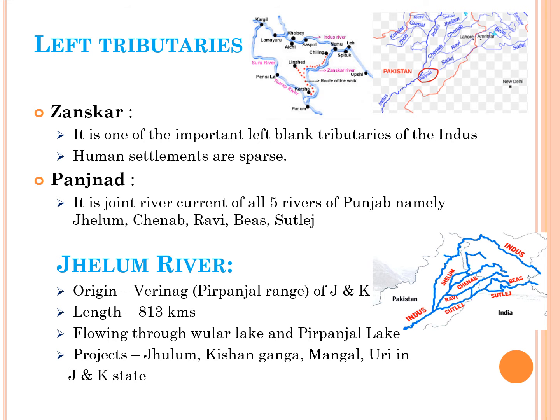The left tributaries are Janskar and Panjanath. In Janskar, there is no human settlement, and it is one of the important left bank tributaries. Panjanath is the joint river current of all the five rivers: Jhelam, Chinab, Ravi, Bees and Sutlas.